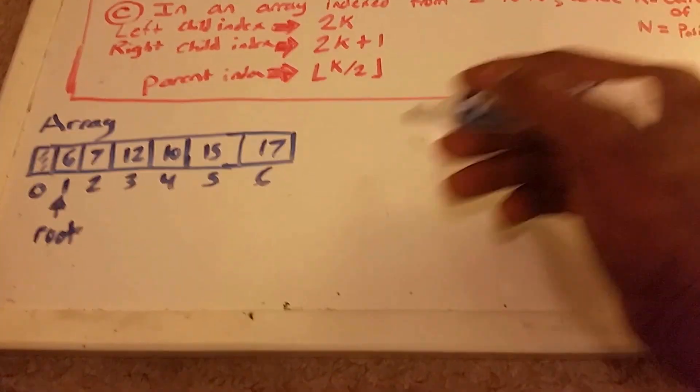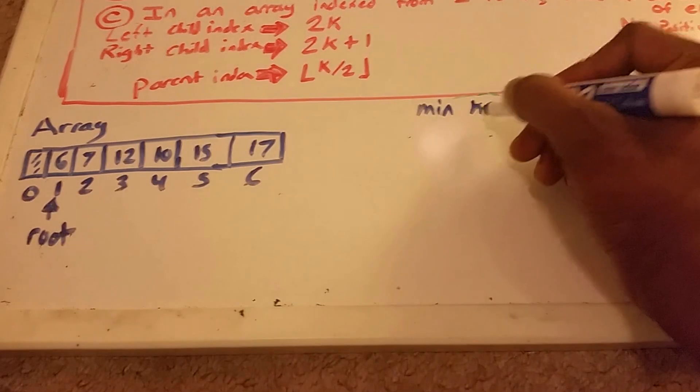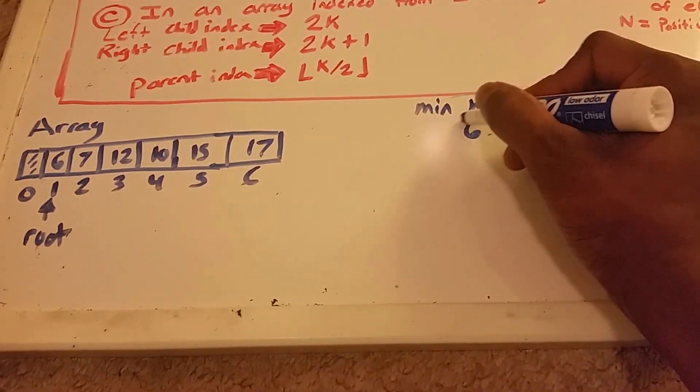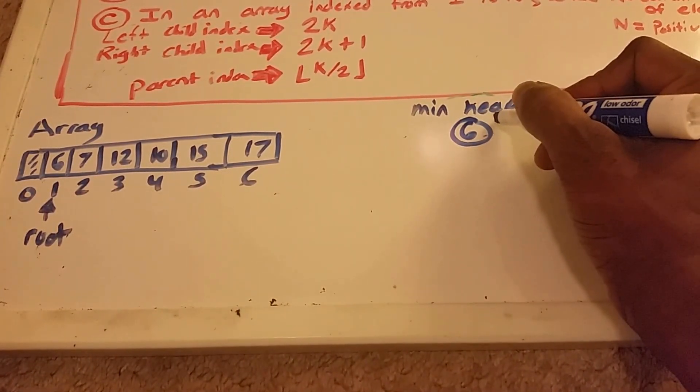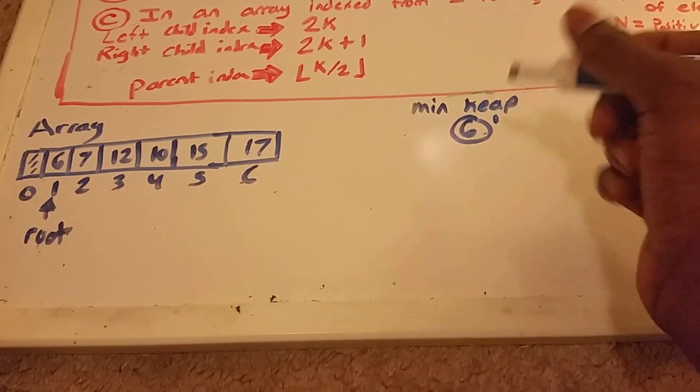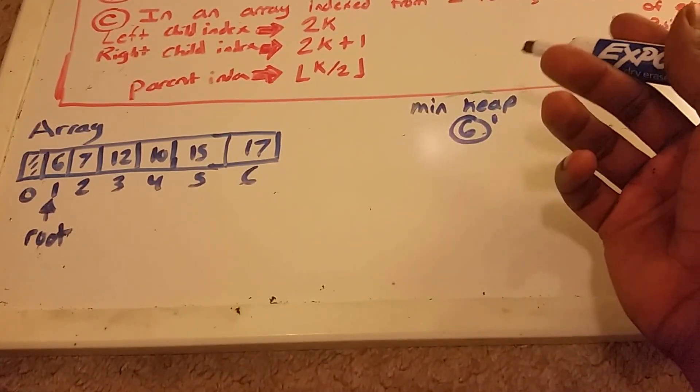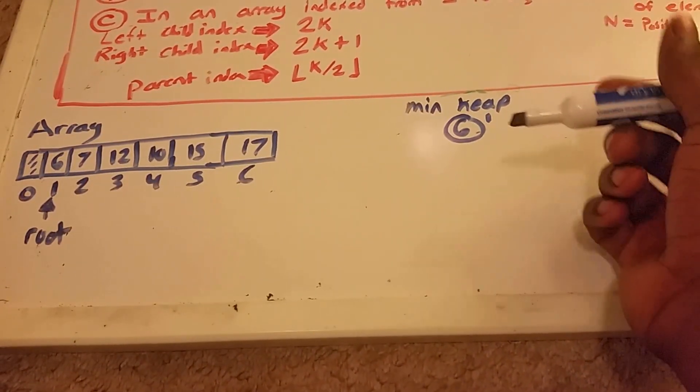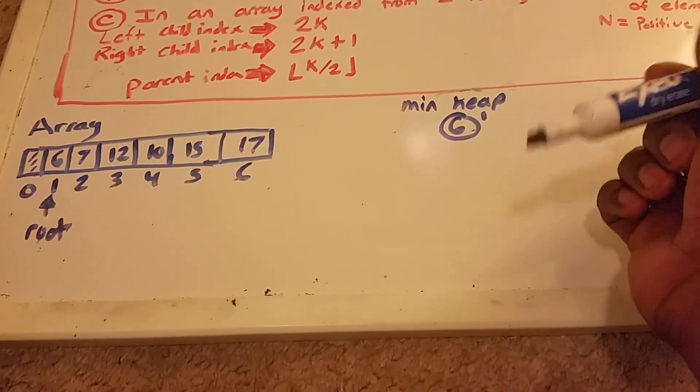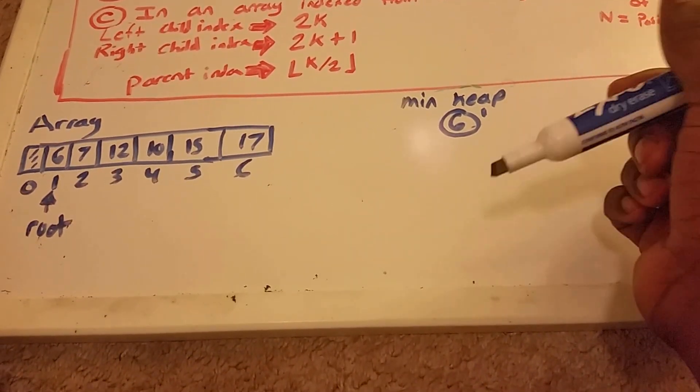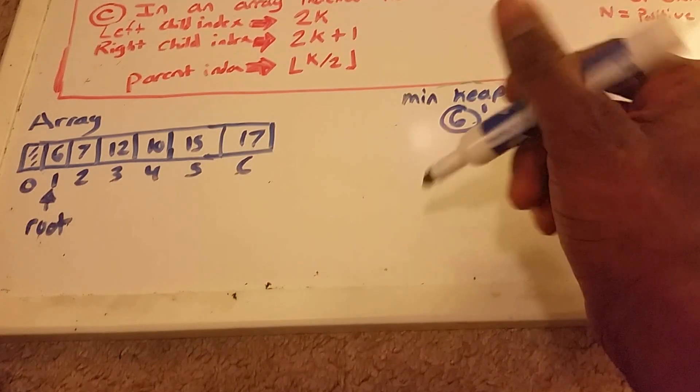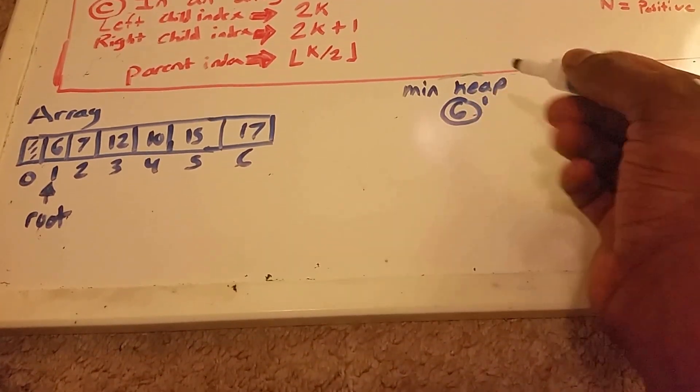Let's get started. First we have element 6. We place it into the heap at index 1. It doesn't have any parents, and right now it doesn't have any children, so we'll move on.